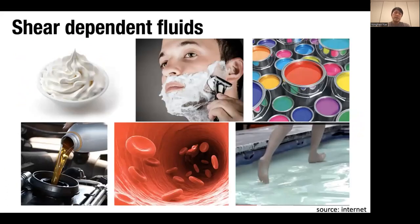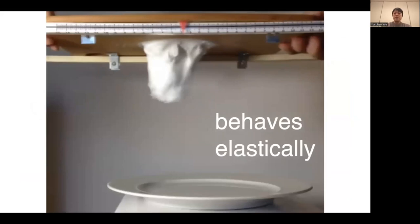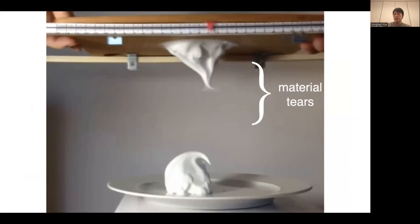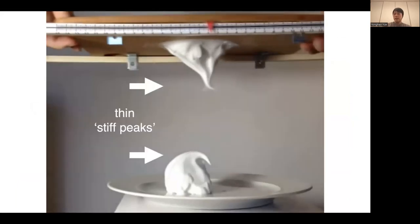Let's get started with the physically-based simulation of complex fluids. We will focus on a particular class called shear-dependent fluids, like cream, shaving cream, oil paintings, blood, and other materials. Here you see shaving cream attached to a plate — I'm shaking the plate. At the beginning, the shaving cream behaves like an elastic material, but soon it starts to flow and a sudden rapid flow occurs. There is a material tear, and unlike water, the stiff peak stays there. That's a very interesting behavior of shear-dependent fluids.